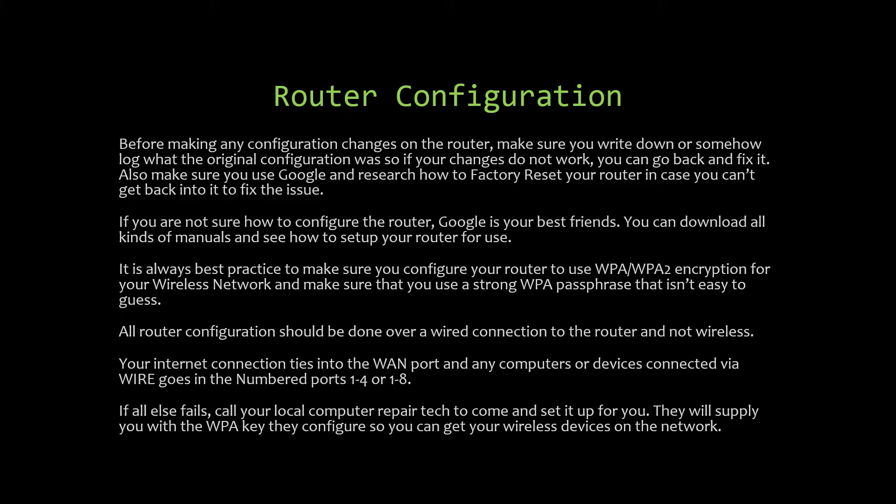Your internet connection ties into the WAN port on the router, and any computer connected via cable goes into numbered ports 1 through 4 or 1 through 8. The modem plugs into the WAN port to tie in your internet connection. The remaining Ethernet ports — RJ45 connectors — are numbered 1 through 4 or 1 through 8. If all else fails, call your local computer repair technician; they'll supply you with the WPA key once configured.